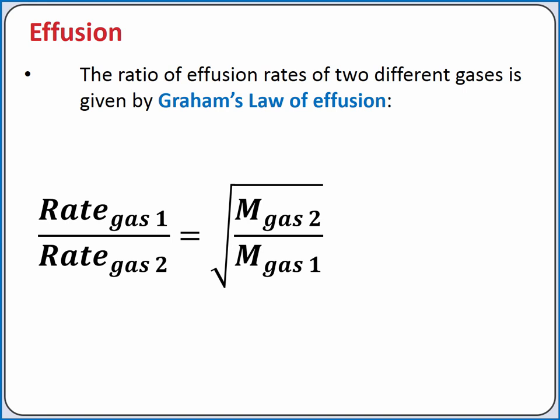According to Graham's law, the rate of effusion of gas 1 divided by the rate of effusion of gas 2 is equal to the square root of the molar mass of gas 2 divided by the molar mass of gas 1.